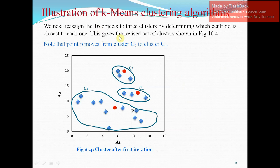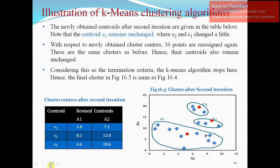We next reassign the 16 objects to three clusters by determining which centroid is closest to each one and this keeps on repeating until we find two iterations with the same or no change. Here, figure 16.4 and 16.5 have denote have no change of items from cluster C1 to C2 or C3. They all are same and cluster centroid have not been changed.